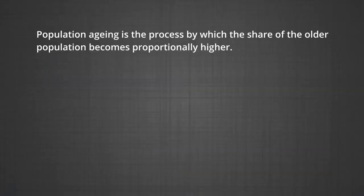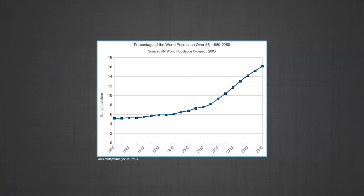We now move on to the discussion on aging population. Population aging is the process by which the share of the older population becomes proportionally higher. This is a new phenomenon of the 20th century. In most developed countries of the world, population in higher age groups has increased due to increased life expectancy. With a reduction in birth rates, the proportion of children in the population has declined. The graph shows the rising trend of the percentage of world population above 65 years from 1950 onwards.